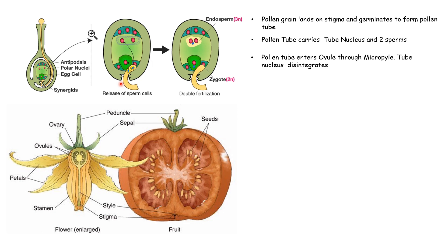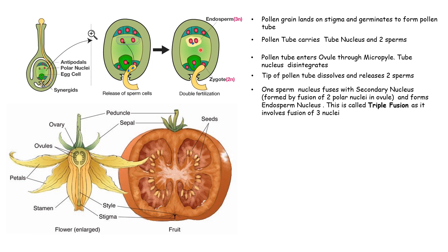The tip of the pollen tube dissolves on entry into the embryo sac, releasing the two sperms into the embryo sac. After the two nuclei are discharged into the ovule, one of them fuses with the secondary nucleus — the one formed by the fusion of the two polar nuclei of the ovule. So one sperm cell fuses with the secondary nucleus and they form the endosperm nucleus. This is called triple fusion because three nuclei are getting fused: two had already fused to make the secondary nucleus, and now the third one coming from the pollen fuses. Hence it is known as triple fusion.